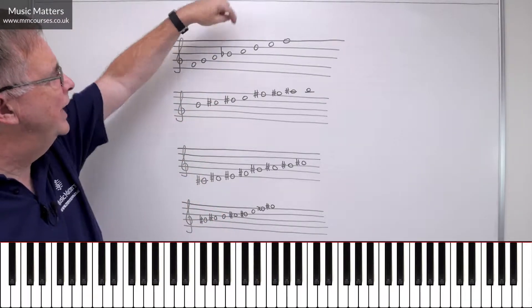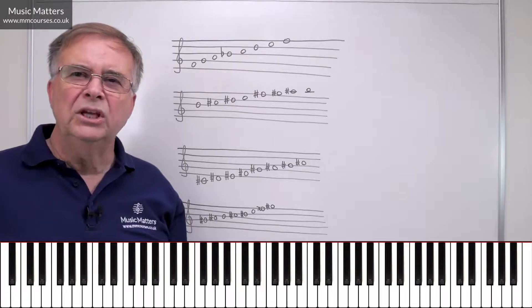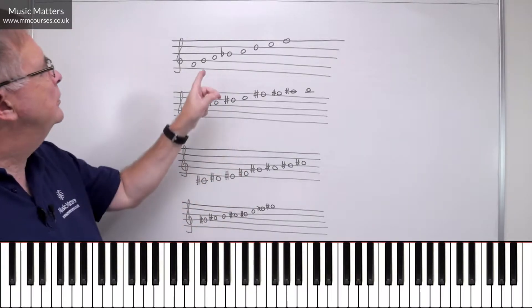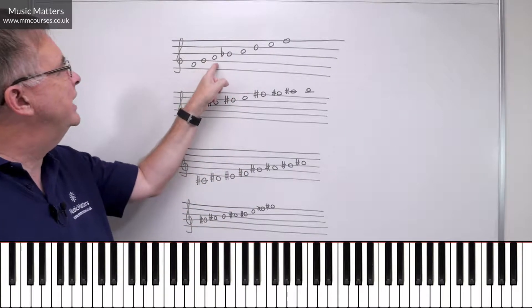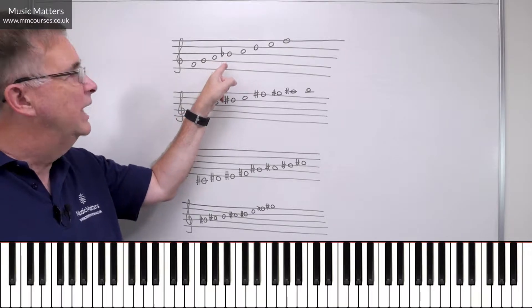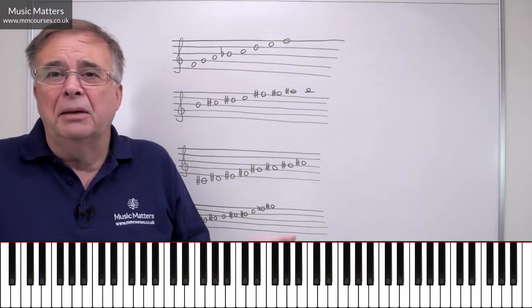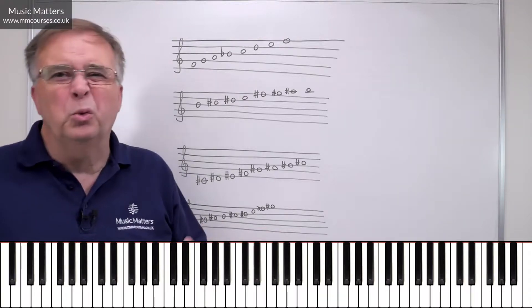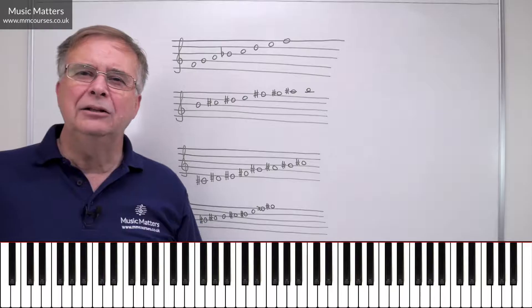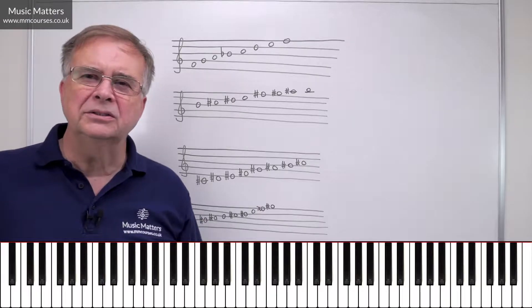Now, if I were to call this note A-sharp, can you see what would happen? I'd end up with two kinds of As. I'd have an A-natural and an A-sharp, and then I wouldn't have any kind of B. Does that matter? Well, at one level, no. But at another level, it would be a little bit of a headache, wouldn't it, for composers?